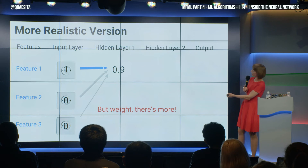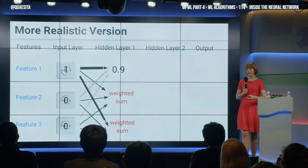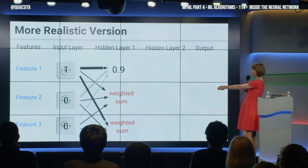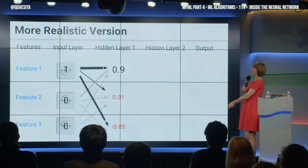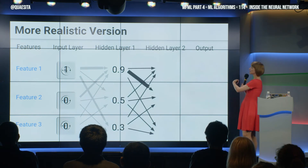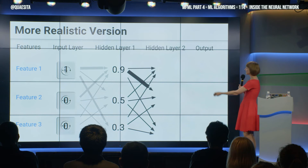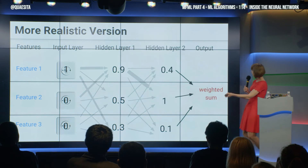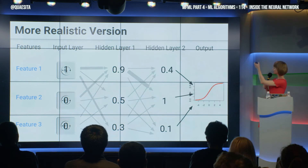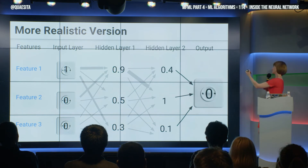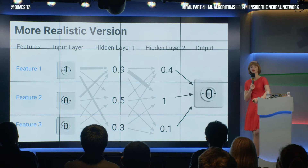But wait, there's more. We are going to take more weighted sums, and because we're tired of doing these calculations, we'll pretend we did them — there you go — and send them through our activation function as well. Then we do that again in the next layer: more weighted sums, more activation functions. And finally, our output, which we then turn into a zero because it's closer to zero than to one.